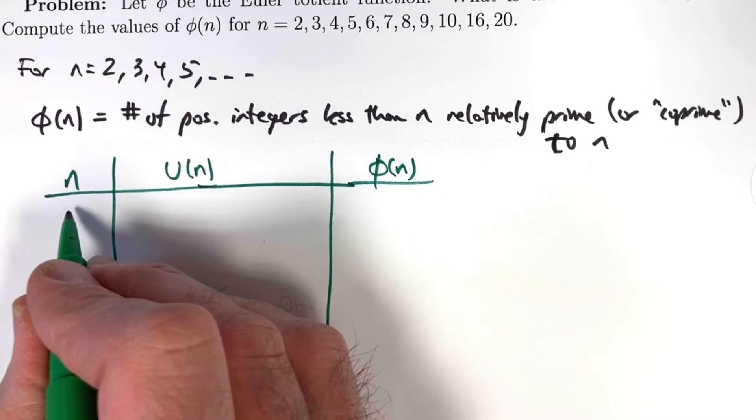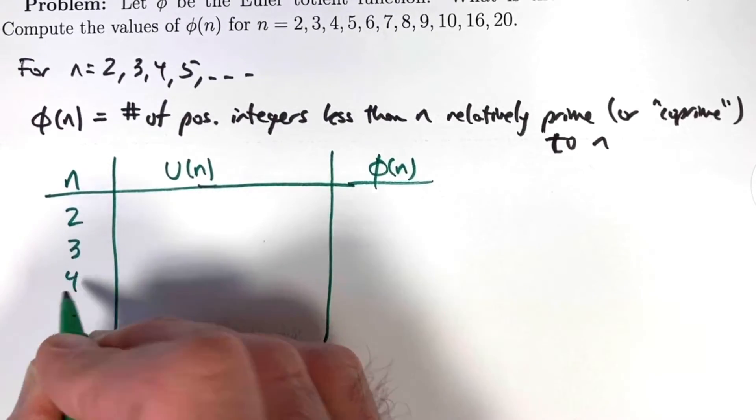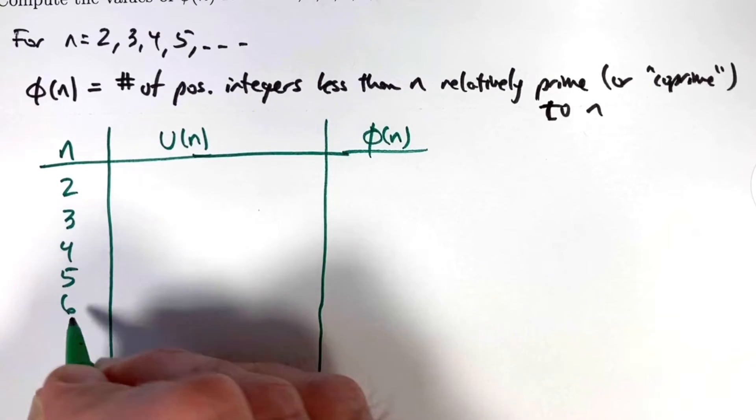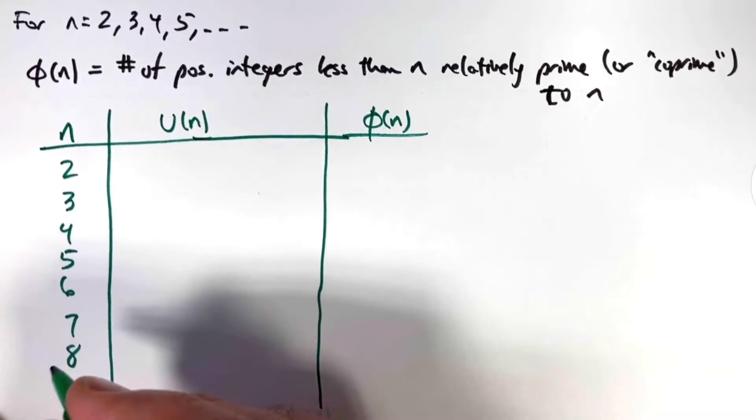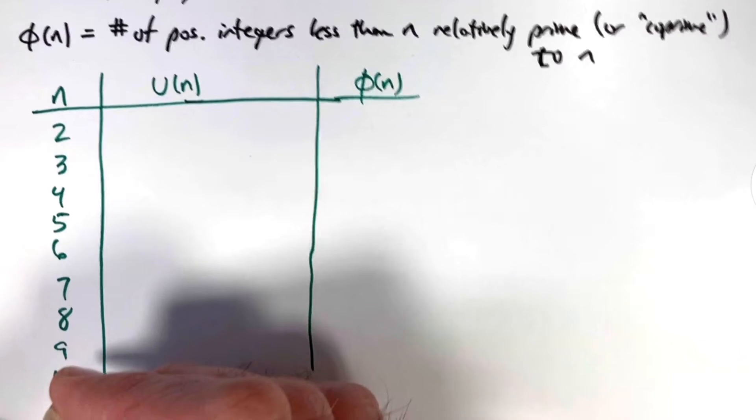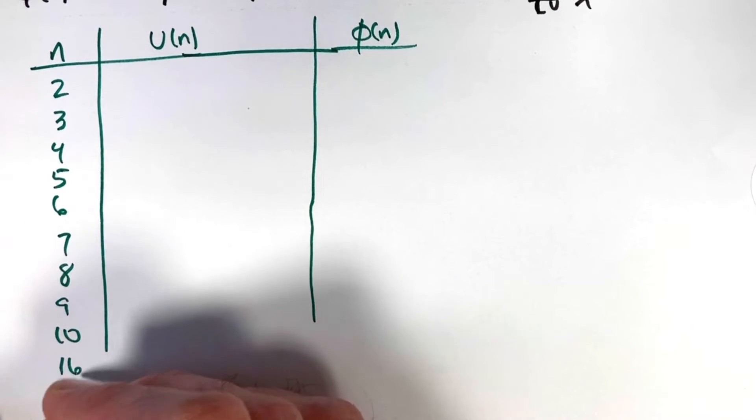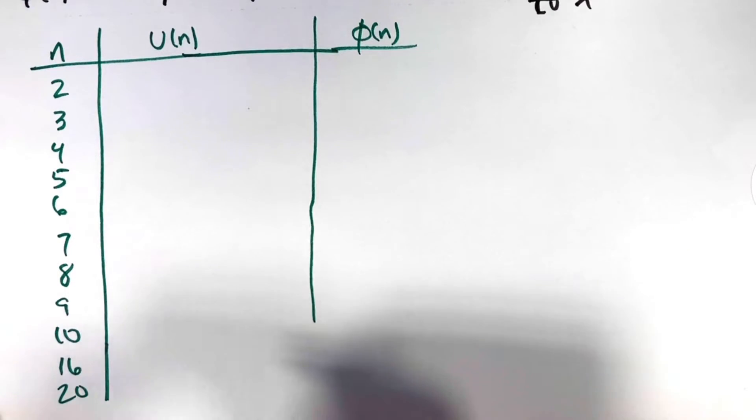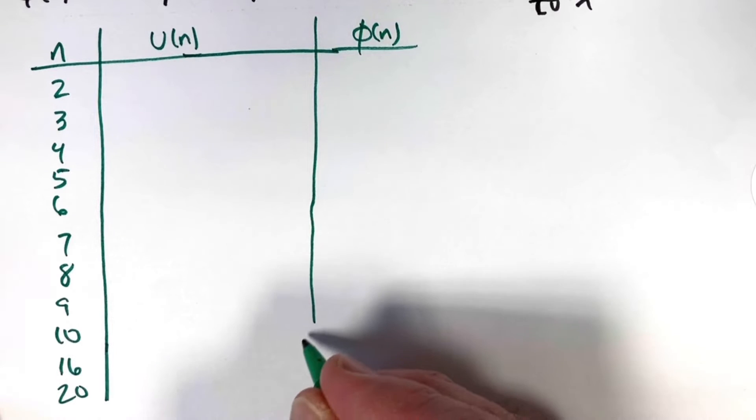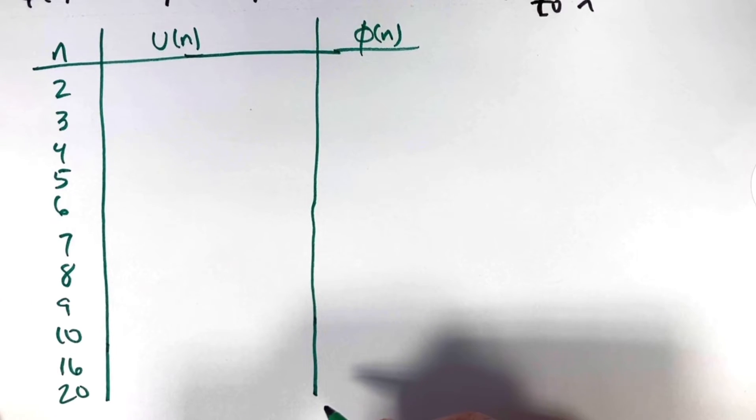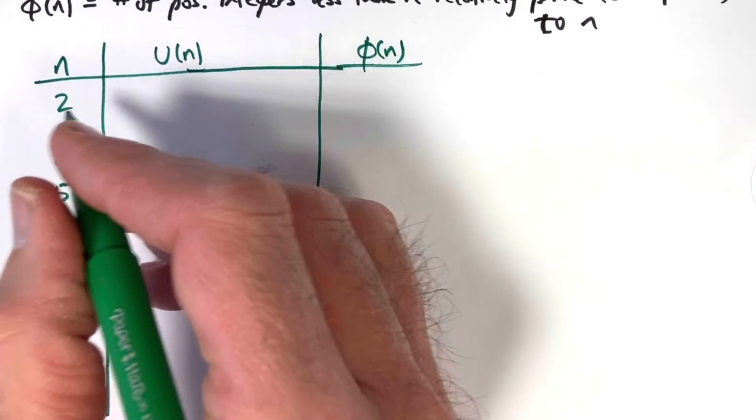So n will be 2, 3, 4, 5, 6, 7, 8, 9, 10, and then we'll jump ahead to 16 and 20 because those are more interesting. We're going to see some patterns. I encourage you to see if you can predict the patterns based on the first few examples.